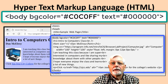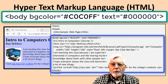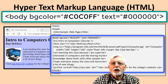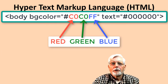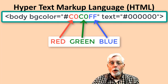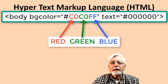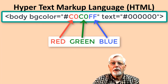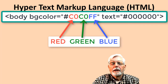The body tag also contains the background color attribute bgcolor and text color. The three primary colors for light are red, green, and blue, as opposed to the primary colors for paint of red, yellow, and blue. The color attribute is expressed as two hexadecimal digits each for the amount of red, green, and blue light for each color, where 00 equals 0 and FF represents the maximum value for that color.